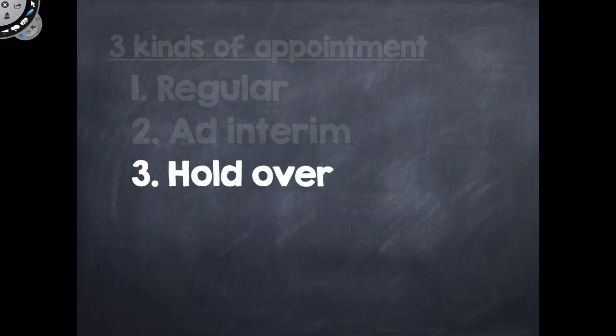For example, if a member of the Board of Nursing's term is about to lapse, but the president tells him to stay in power because the PNA cannot find a member that will qualify as a BON member, then the current BON will just stay on their position until their successors have been qualified and appointed.